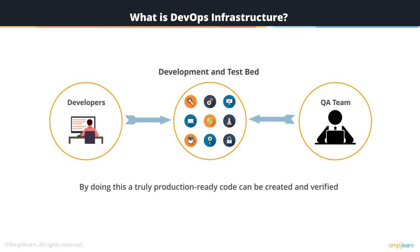By doing this, truly production-ready code can be created and verified at various stages of development and testing. It's this infrastructure on-demand requirement that holds back many organizations from adopting the DevOps model. For most organizations, their traditional IT infrastructure was built for stability and predictability, and not for the type of daily responsiveness that is required by DevOps.